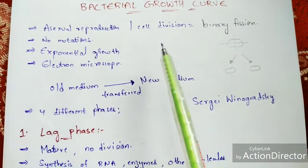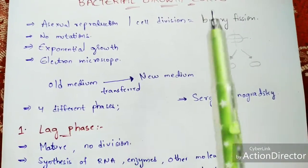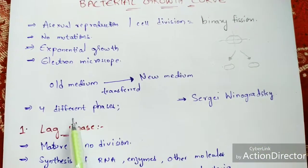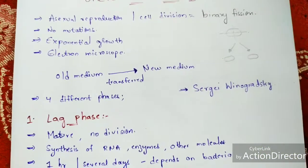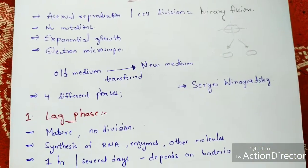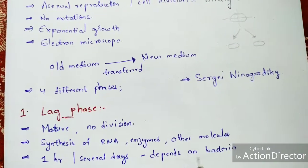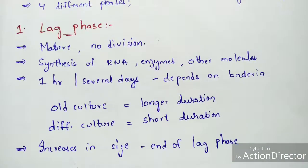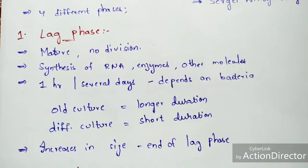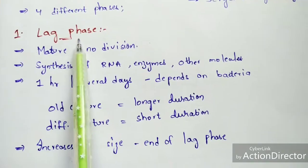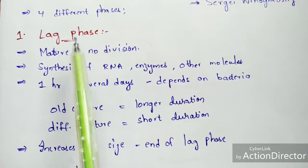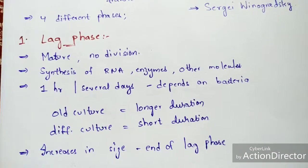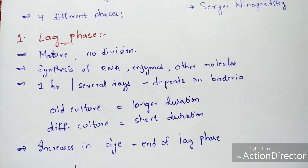This phenomenon of bacterial growth can be explained by four different phases: lag phase, log phase, stationary phase, and death phase. Let us learn each step by step. In the lag phase, the bacterial cell will mature, but there will be no division process.